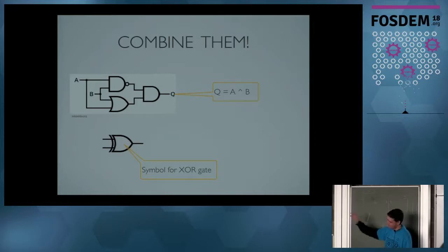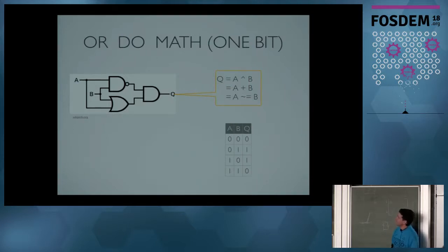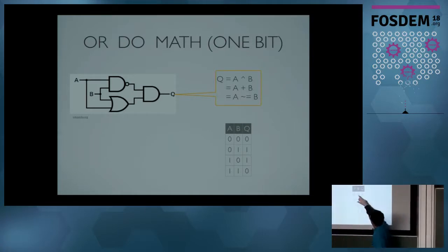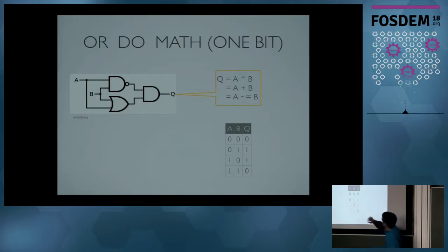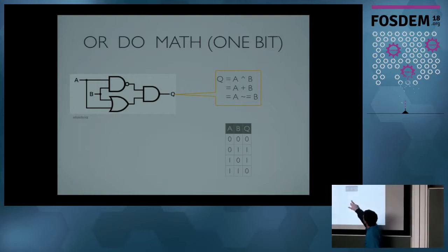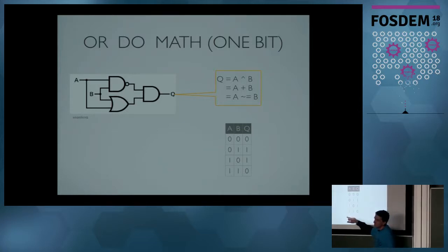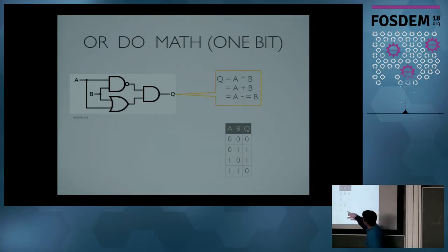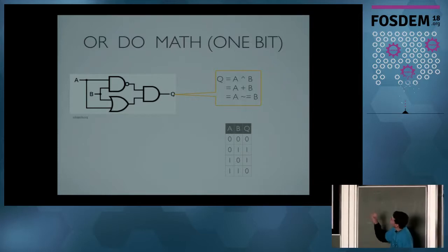Here we create the XOR, and if you combine gates in a meaningful way, you can even do some math. For example, the XOR — here is the output for all possible inputs. In fact, XOR for one bit is the same as an addition. So if you have one in input, you get one as the result. And if you have two ones, you should get two, but because it's only the lowest bit of the output, you get zero. So this is what is called a half adder.